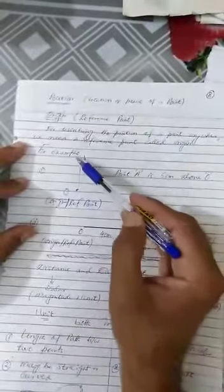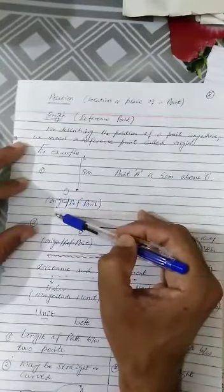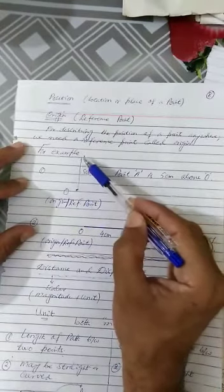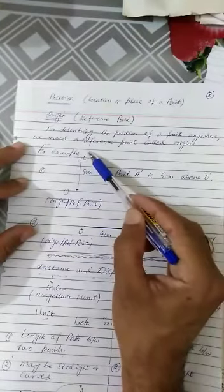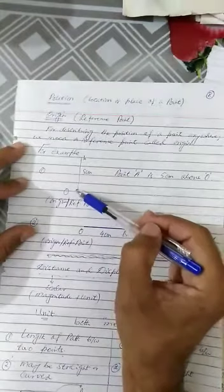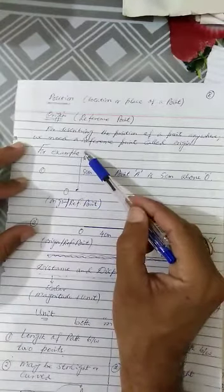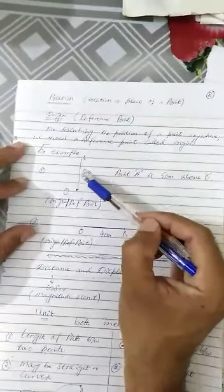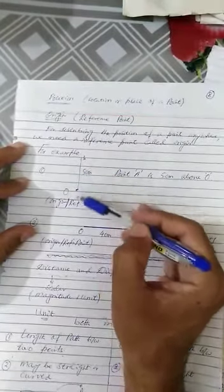Let's say we have this point which is origin O, the reference point. Now we are describing the position of point A. The position of point A is five centimeters above O. So point A is located five centimeters above point O. We are describing the position of point A with respect to origin O.